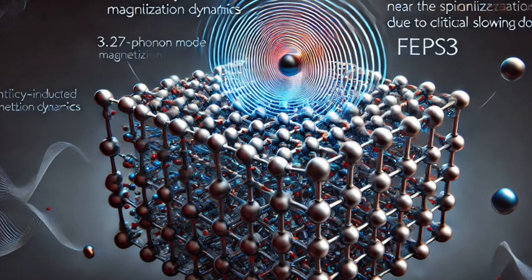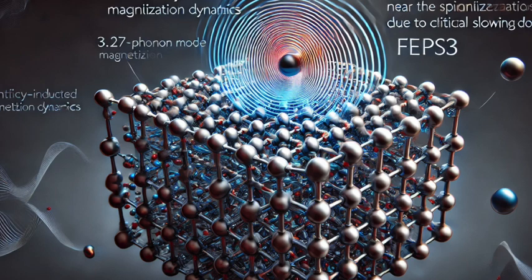Okay, so we've got this material on the verge of a magnetic shift. What happens when scientists hit it with terahertz pulses near this critical point? Well, they discovered something remarkable: they could actually induce magnetization. Those perfectly balanced spins flipped—some of them at least—out of their usual arrangement.